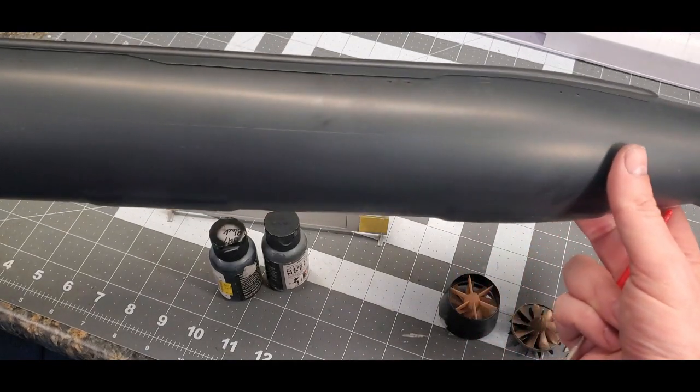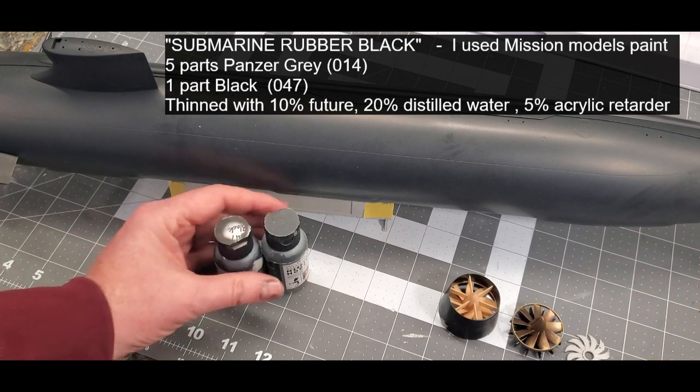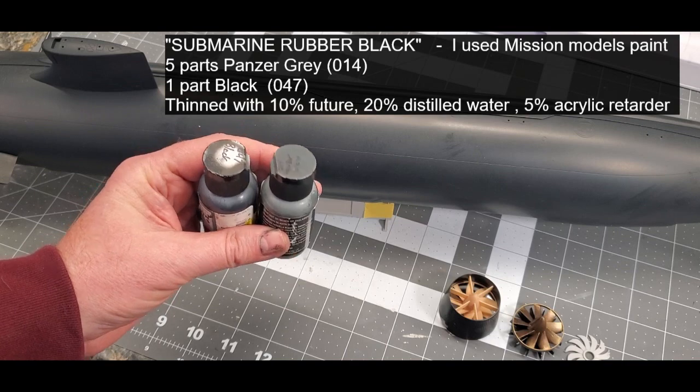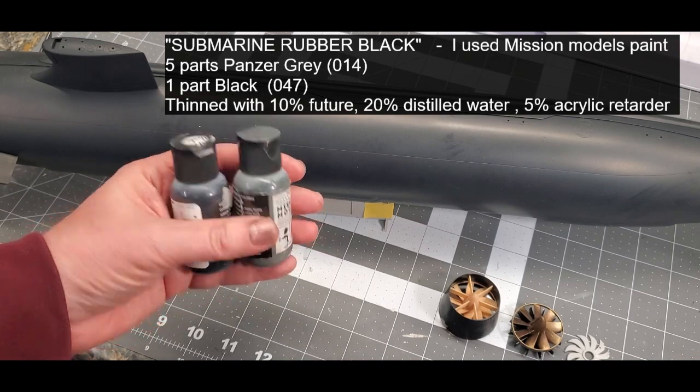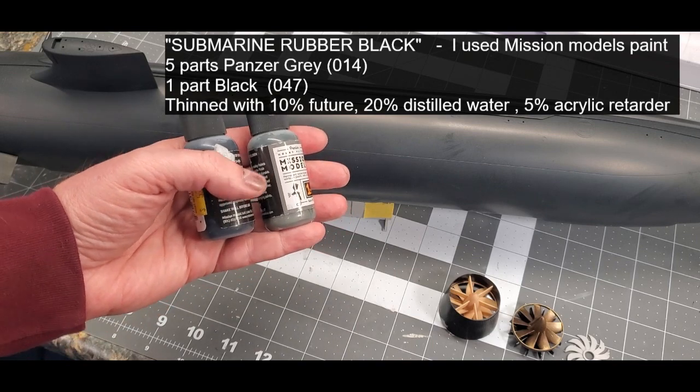And that grayish color that I created was simply mixing Mission Models paint 20 to 1 of this Panzer gray, which is already a fairly dark gray, to one part, or actually five parts black.